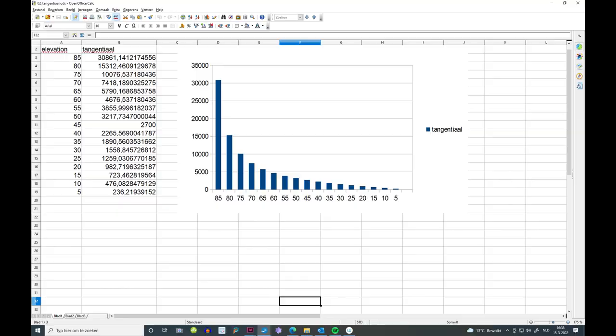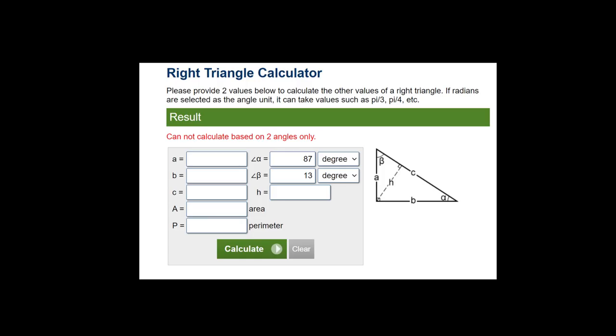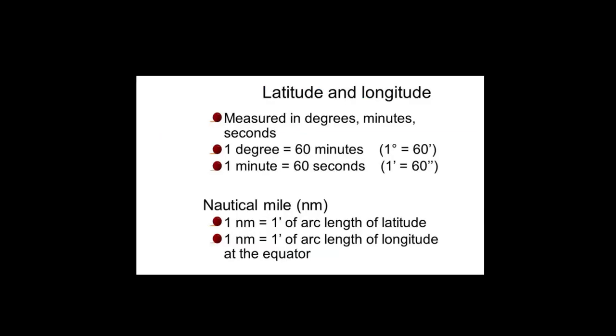Without realizing it, Brian's logic has rather convincingly demonstrated that celestial navigation doesn't work and cannot work on a flat earth. You cannot calculate the distance to the GP of a star using trigonometry because you don't know the height of the star. And you cannot calculate the distance to the GP of a star with the 60 nautical miles per degree formula because that formula cannot work on a flat plane.